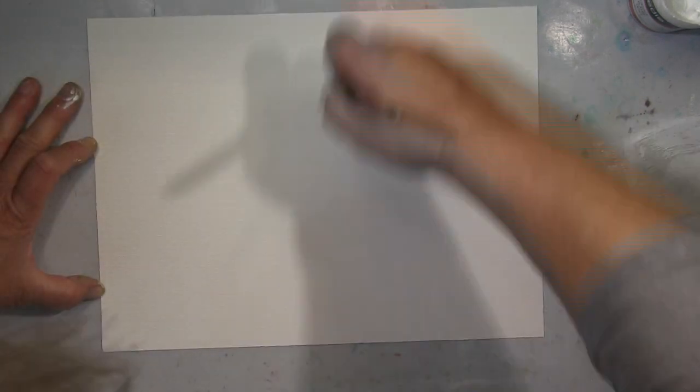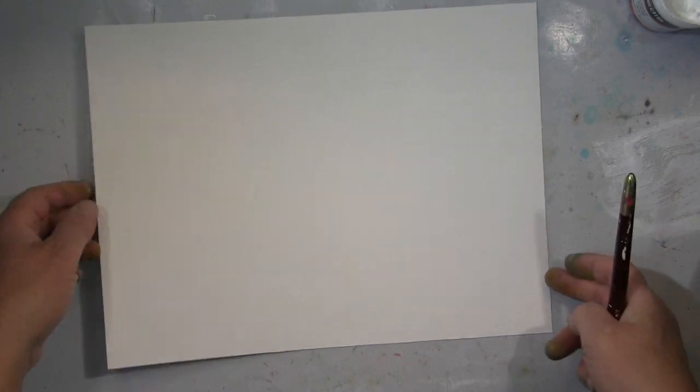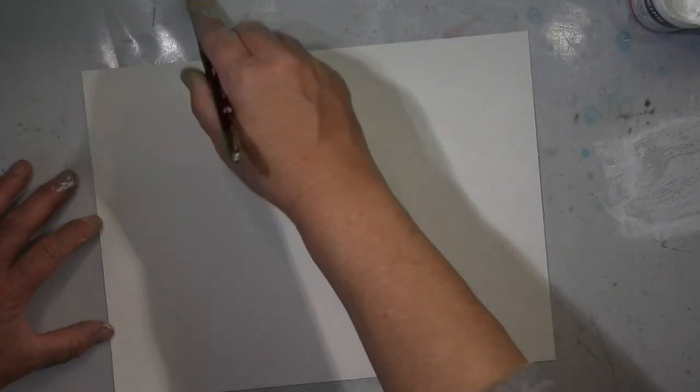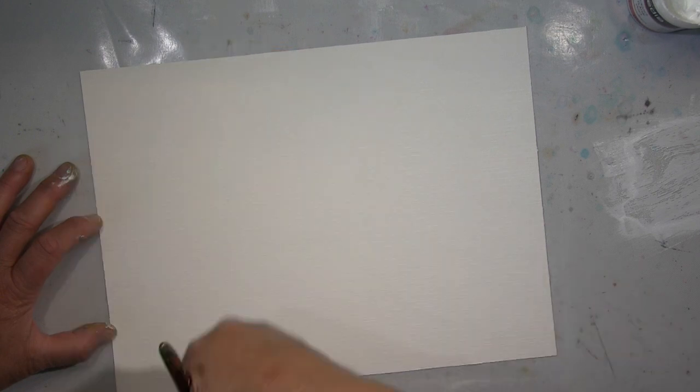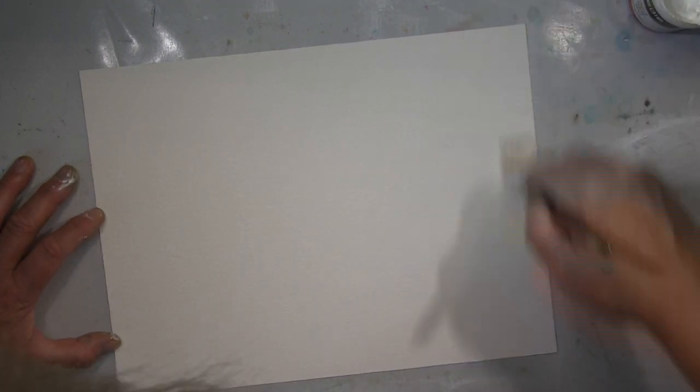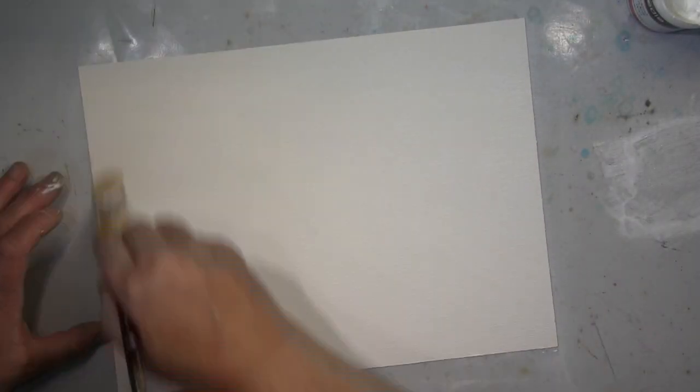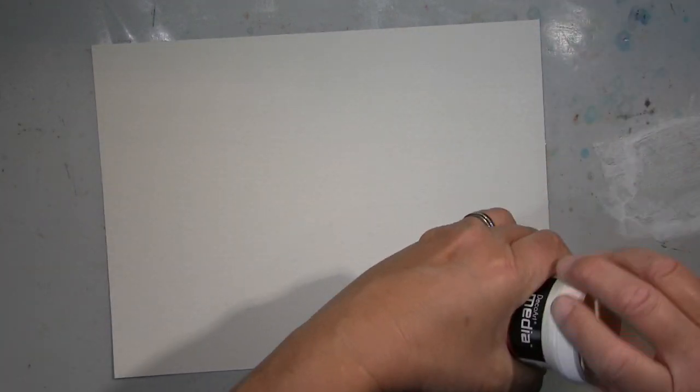Hallo ihr Lieben, ich zeige euch heute wie ihr, wenn ihr dieses Aquarellpapier habt das sehr sehr rough ist, also sehr rau ist, wie ihr das für euren Vorteil benutzen könnt. Und zwar benutze ich hier Gesso und packe es mit einem relativ trockenen Pinsel. Ich mache immer sicher dass ich wirklich nicht so einen dicken Blob von Farbe auf meinem Pinsel habe, sondern gehe erst auf meiner Kraftmatte hin und her und dann über das Papier, dass ich wirklich nur die Oberfläche mit dem Gesso berühre.